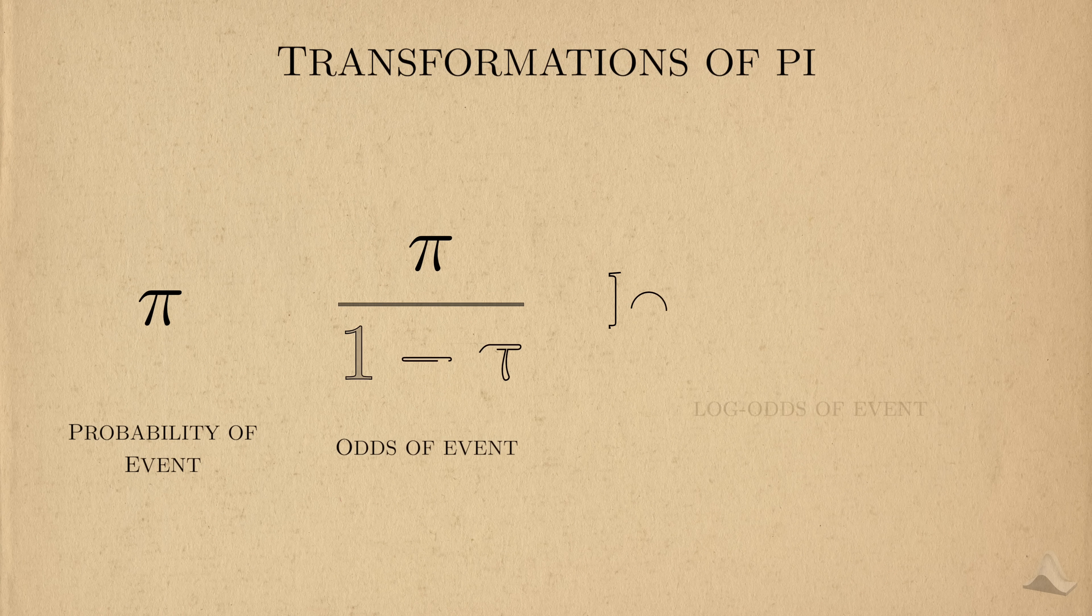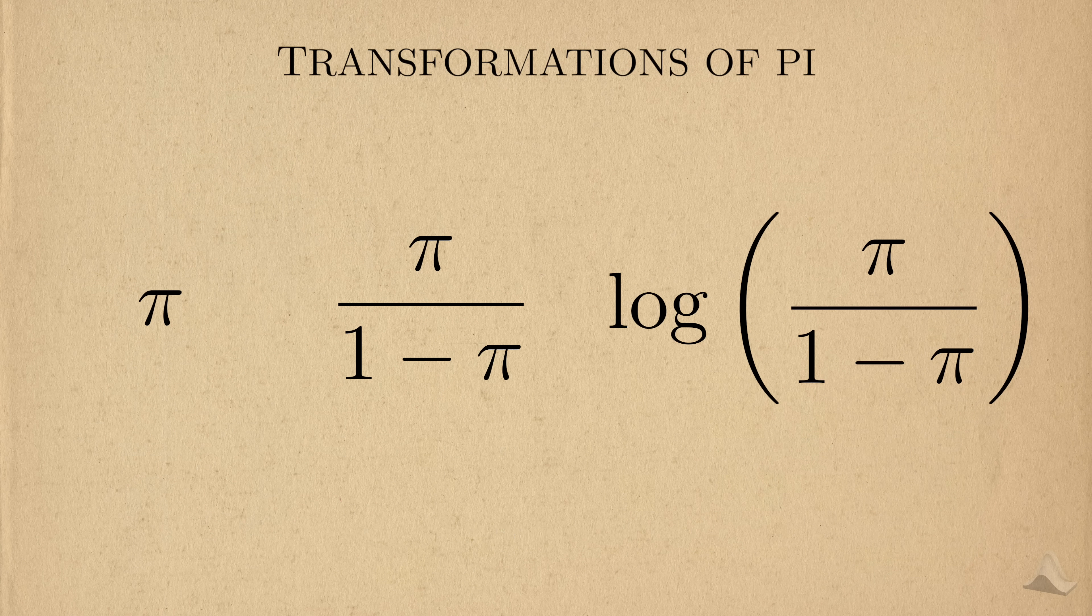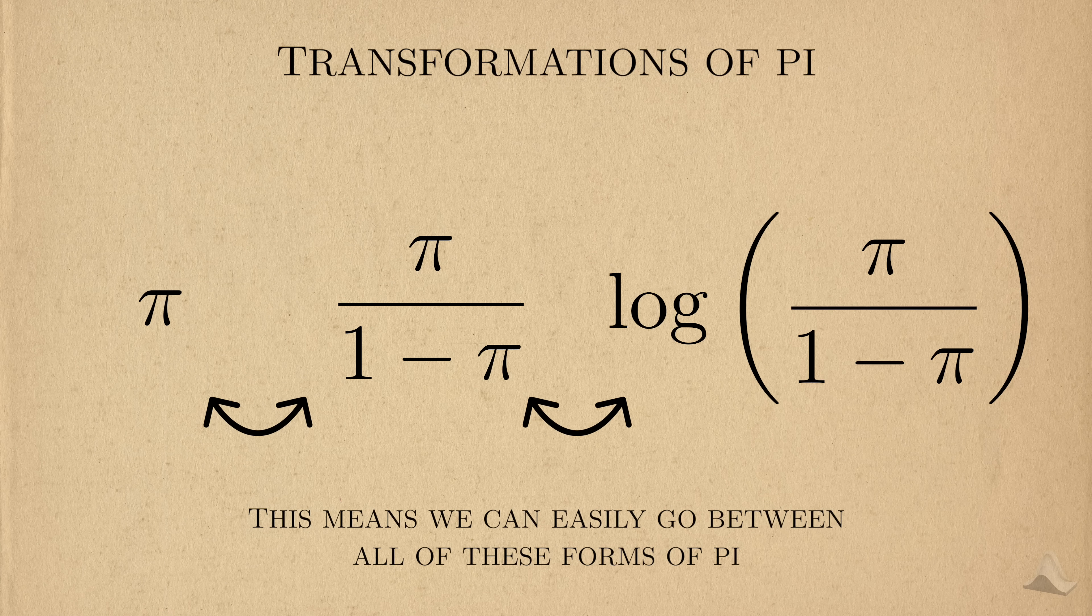Another key feature about these transformations is that we can invert all of them. This means that we can start with one form of pi and easily convert it into another form that might be easier to communicate to others. And that's the key here.